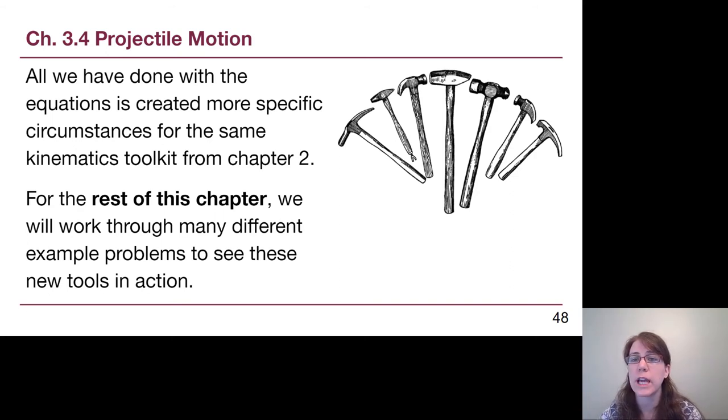The only thing that we've really done with the equations compared to the equations we've been using in Chapter 2 is we've created a slightly more specific set of circumstances. It's kind of like using a very specialized hammer for a particular task, but it's still functionally something you use in the same situations. The toolkit that we have from Chapter 2, it's the same exact tools here in Chapter 3. They're just slightly more specified.